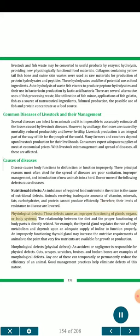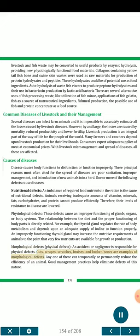Physiological defects cause an improper functioning of glands, organs, or body systems. The relationship between the diet and the proper functioning of body parts is directly related. For example, the thyroid gland regulates the rate of body metabolism and depends upon an adequate supply of iodine to function properly. An improperly functioning thyroid gland may increase the nutritive requirements of animals to the point that very few nutrients are available for growth or production. Morphological or physical defects — an accident or negligence is responsible for physical defects. Cuts, scrapes, scratches, bruises, and broken bones are examples of morphological defects. Any one of these can temporarily or permanently reduce the efficiency of an animal. Good management practices help eliminate defects of this nature.